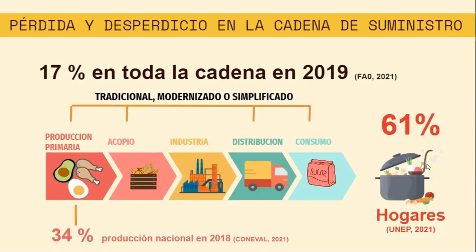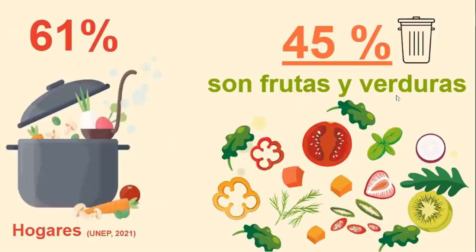Ahora bien, nosotros nos vamos a enfocar únicamente en el 61% de los desperdicios de alimentos que surgen en los hogares. ¿Cuántos de nosotros tiramos más de la mitad de lo que compramos para poder alimentarnos? En cuanto a frutas, verduras, carne, pollo, huevo y todos los alimentos que nosotros compramos, si es en el súper, en un mercado, ¿cuánto de esos alimentos nosotros desperdiciamos? Nos dicen que el 45% de estos alimentos corresponden a frutas y verduras. Y tener un 45% de alimentos desperdiciados te habla también de esa parte del gasto familiar que la familia está perdiendo, está tirando su dinero a la basura. ¿Por qué? Por una mala planeación en cuanto a los métodos de conservación.